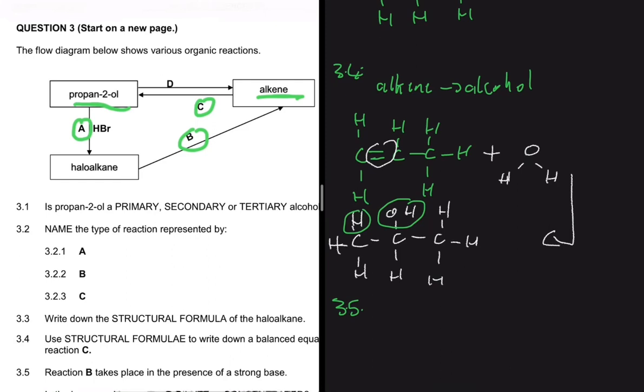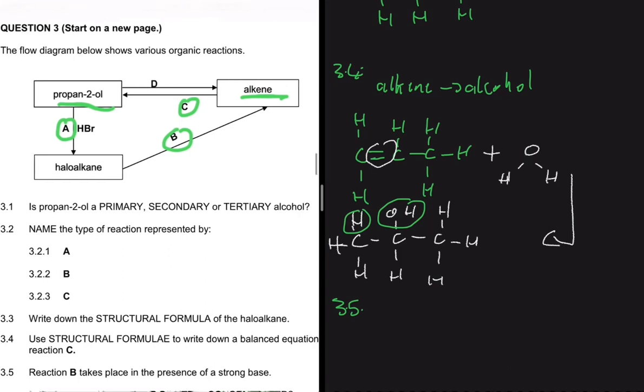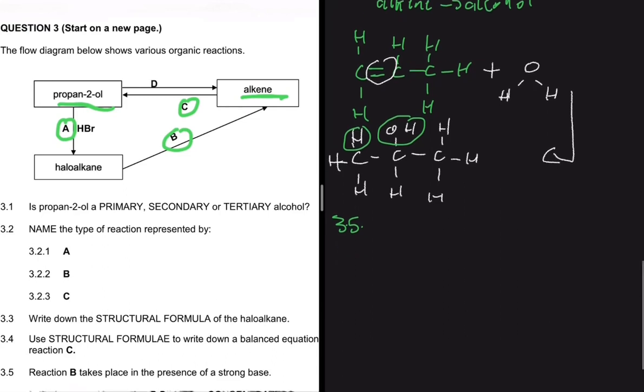3.5. 3.5 is saying reaction B takes place in the presence of a strong base. Is the base used in reaction B dilute or concentrated? So let's look at reaction B. For reaction B, we have an elimination reaction. For elimination reaction to take place, we need a concentrated base. If the base is dilute, then we get a substitution reaction.